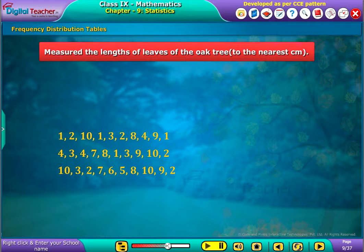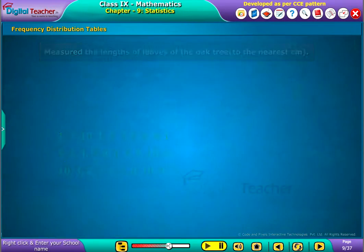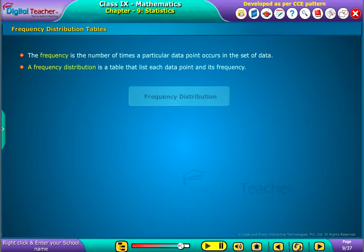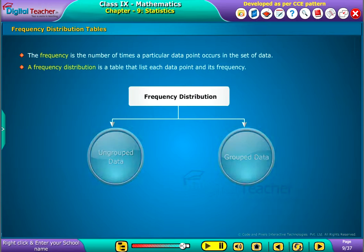Now let us learn about frequency distribution tables. The frequency is the number of times a particular data point occurs in the set of data. The frequency distribution is a table that lists each data point and its frequency. The frequency distribution is categorized as ungrouped and grouped data.